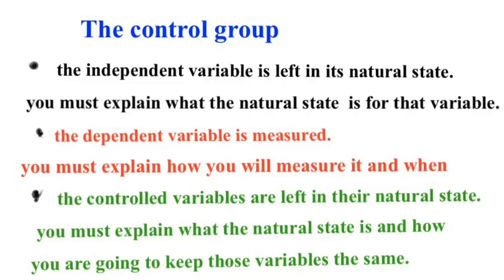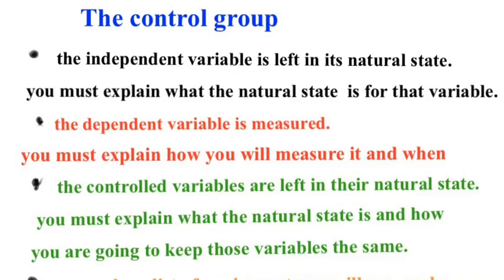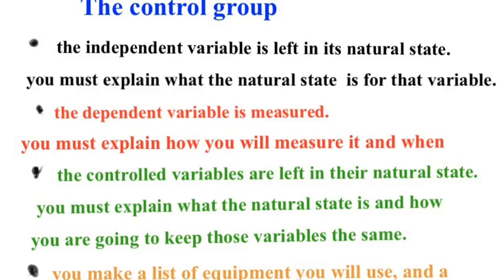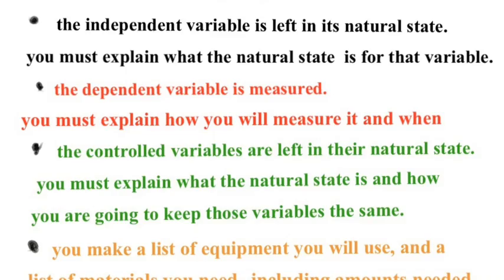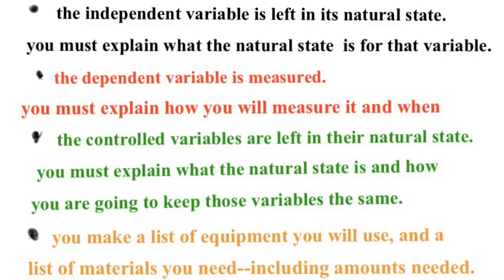We also need something to compare to, to see if the independent variable was the cause and if it wasn't just blind chance — they would have grown that much taller anyway. So a control group is the natural state of things. In this case, that control group would be no fertilizer at all, because in nature you have no fertilizer added. You might have stuff die and get decomposed, but you don't have any fertilizer added. So that's my natural state — my independent variable left in the natural state.